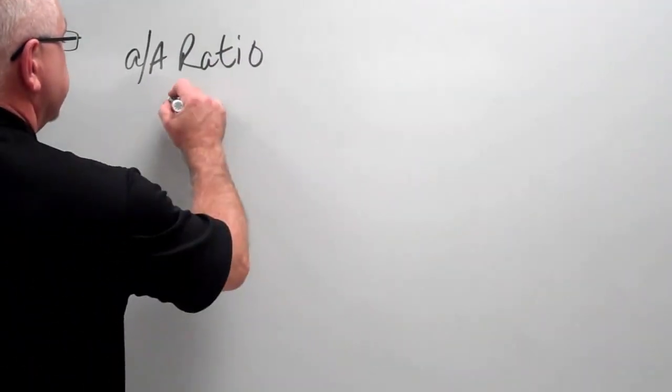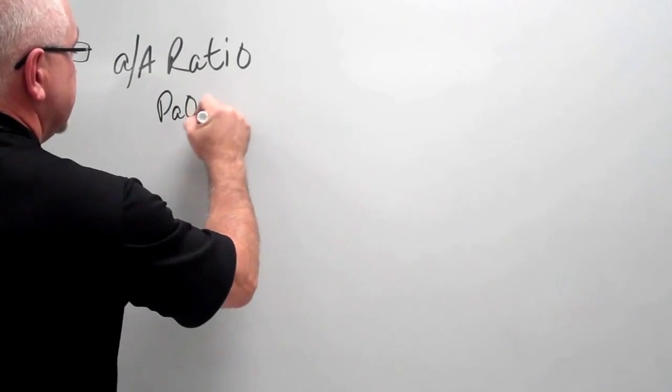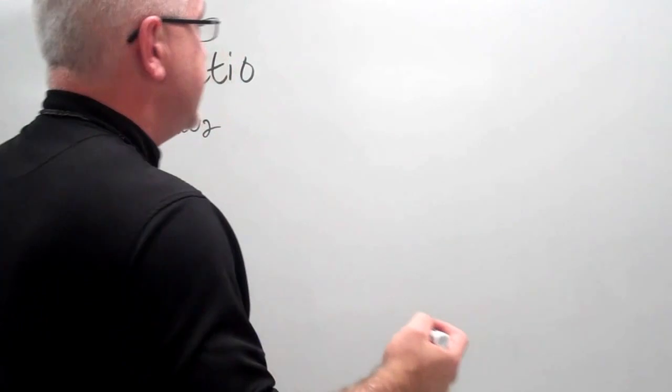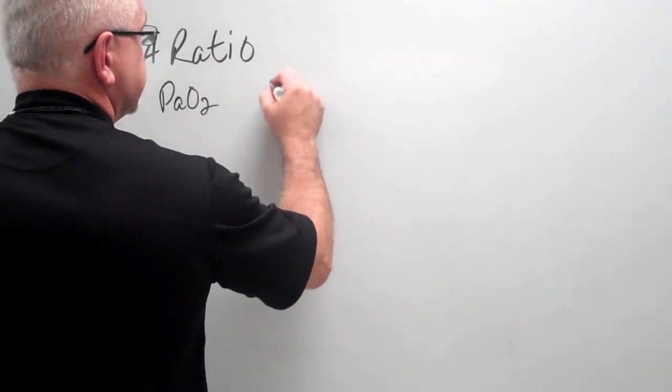First, I'm going to look at my P little a O2, and normal P little a O2 is going to be between 80 and 100 millimeters of mercury.